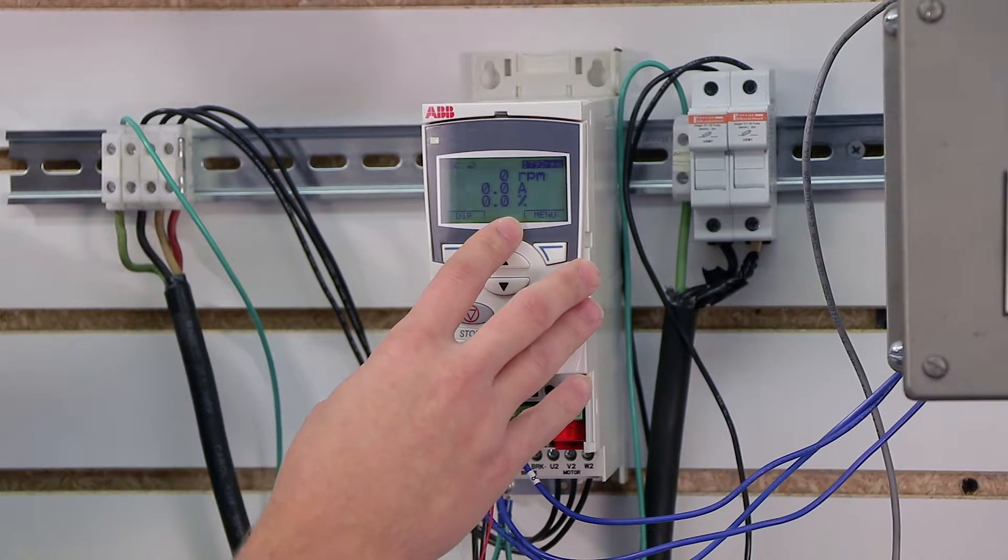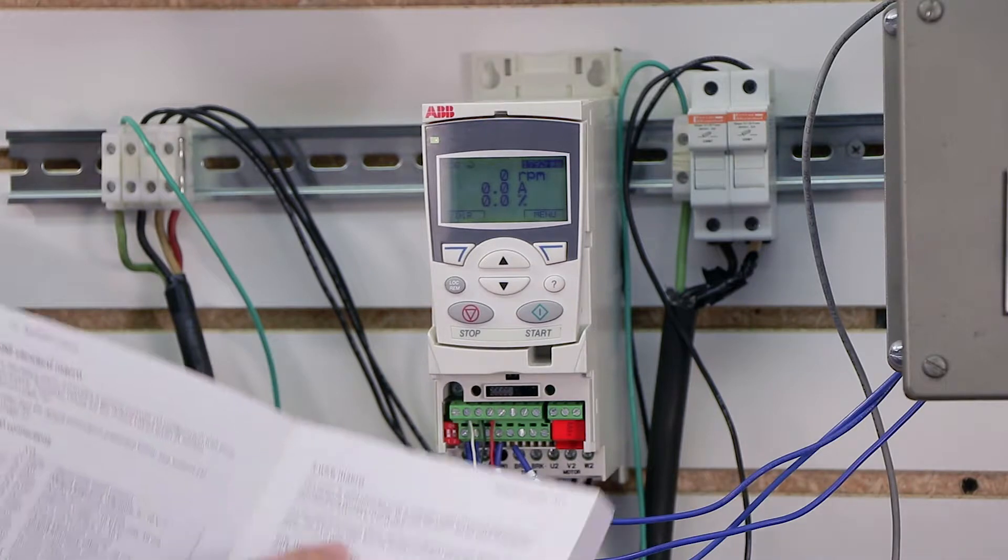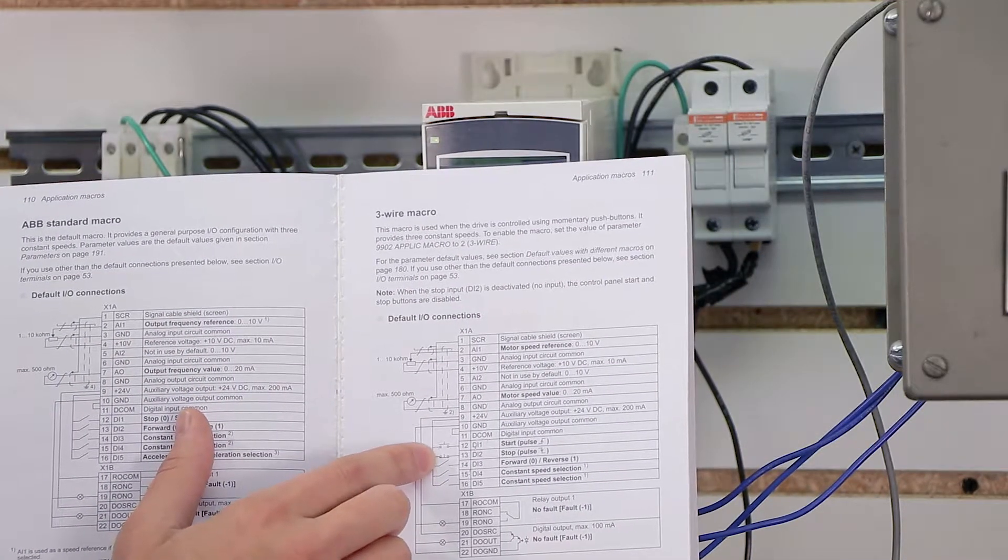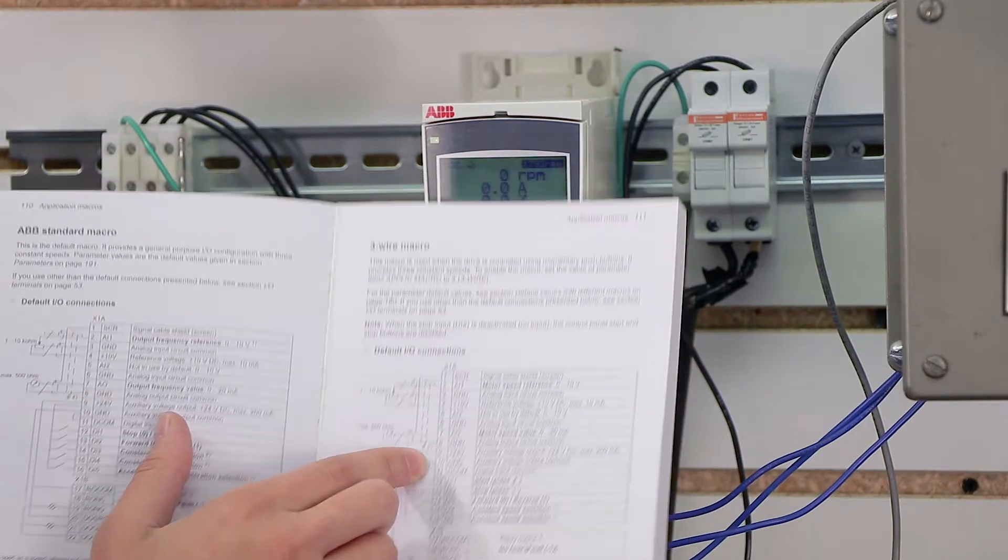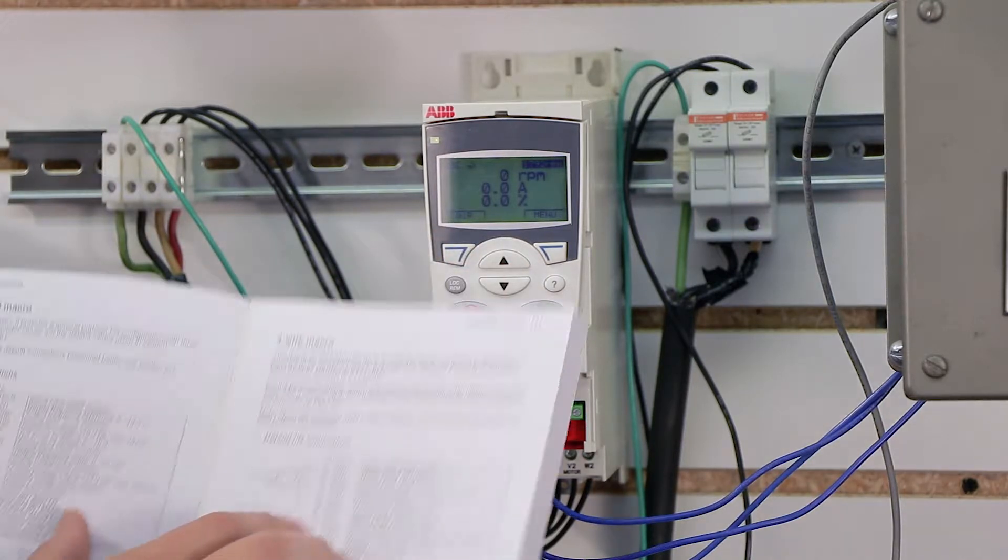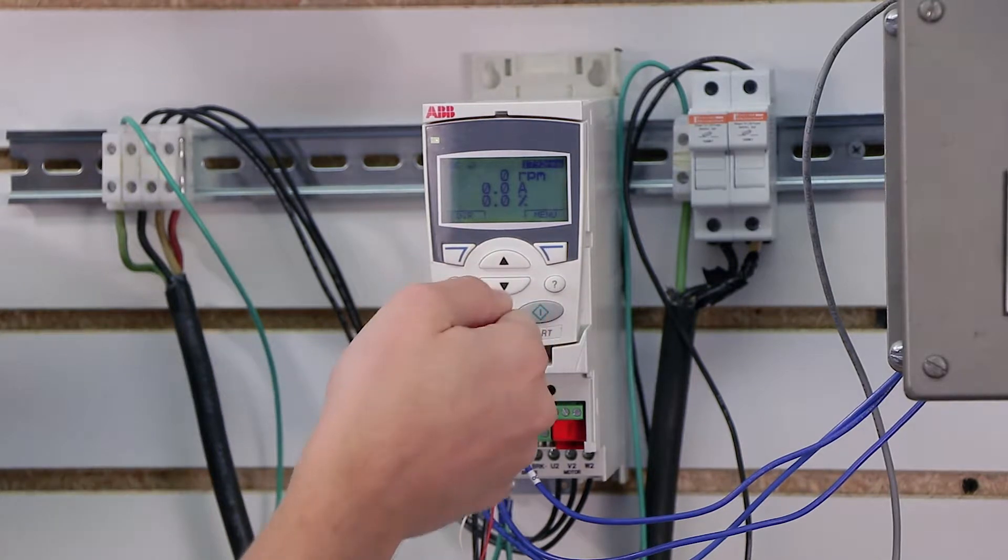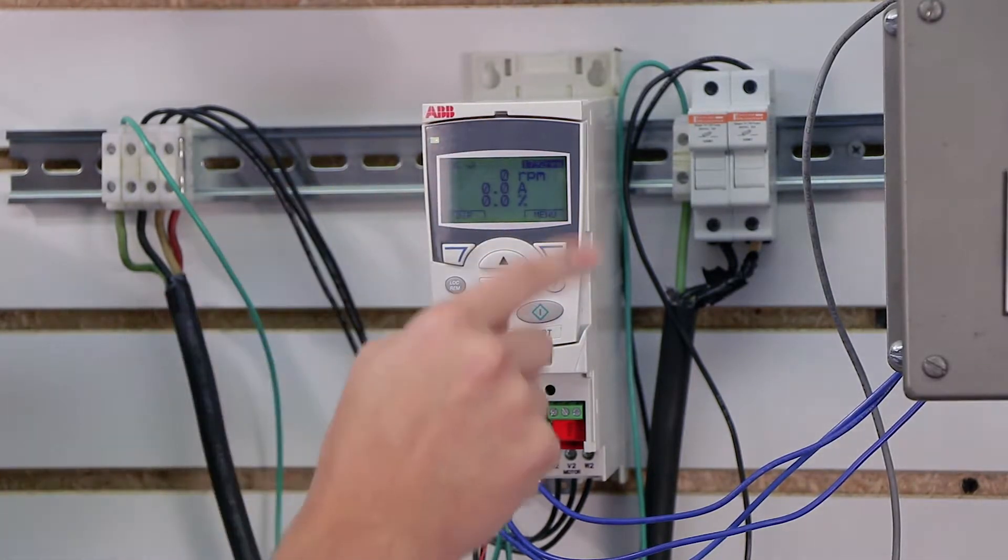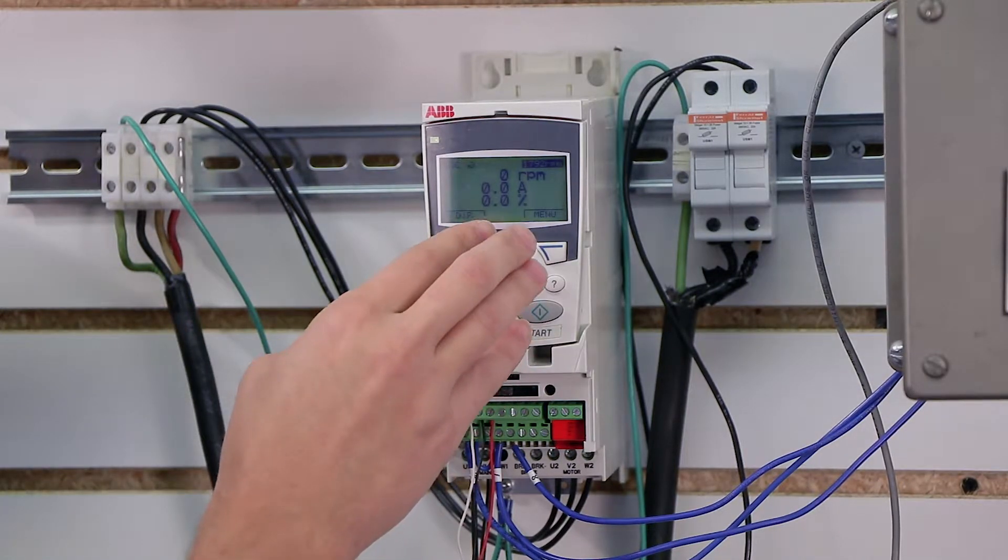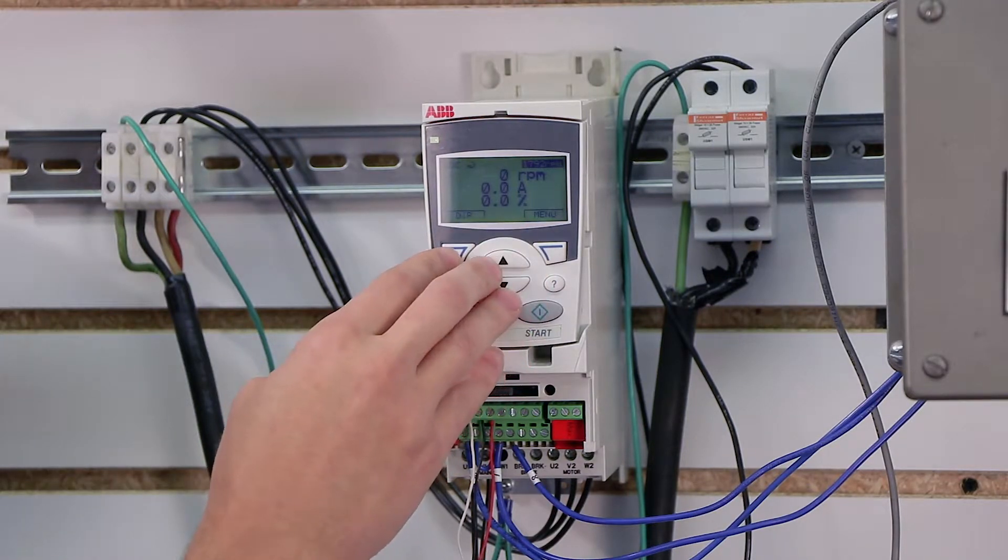First we're going to cover how to actually change the program so that it looks for a selector switch instead of a push button. In the previous video, we switched to a three-wire macro. This three-wire macro looked for a momentary signal in order to issue the start command of the drive. In a selector switch scenario, there is no momentary signal. The signal is actually maintained, so while the selector switch is on, electricity is constantly flowing into the drive on the control strip. So we need to change the actual program to look for a constant signal for a start command instead of a momentary one.